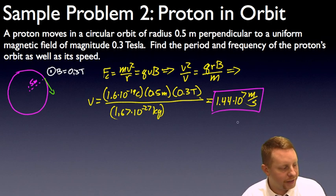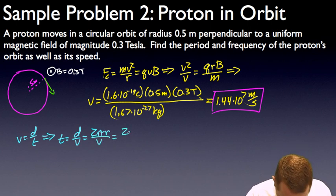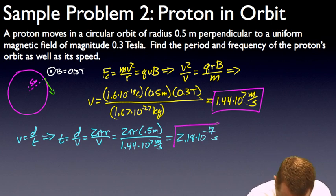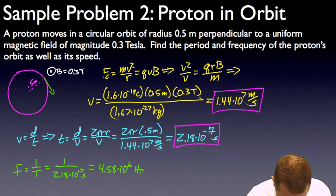And we'll neglect any relativistic effects here in this problem. Now, if we want to figure out what its period and frequency are, well, if it's moving in a circle, that's one circumference. So if velocity is distance traveled divided by time, then the time to go once around is the distance divided by the velocity, where 2 pi r, one circumference divided by the velocity, which is 2 pi times our radius, 0.5 meters, over 1.44 times 10 to the 7 meters per second, which gives me a period of about 2.18 times 10 to the minus 7 seconds. And once I have period, then frequency is pretty straightforward. Frequency is just 1 divided by the period, or 1 divided by 2.18 times 10 to the minus 7 seconds, which is going to give me about 4.58 times 10 to the 6th, 1 over seconds, or hertz, which I'm going to write as 4.58 megahertz.